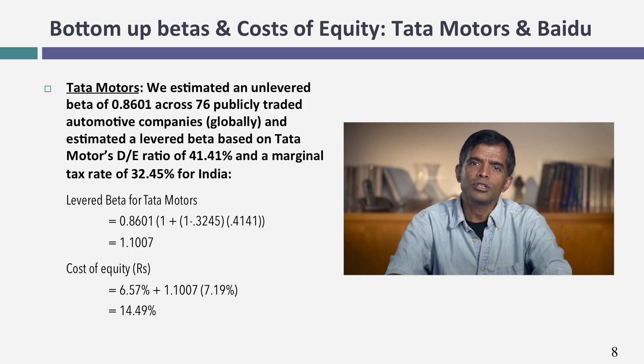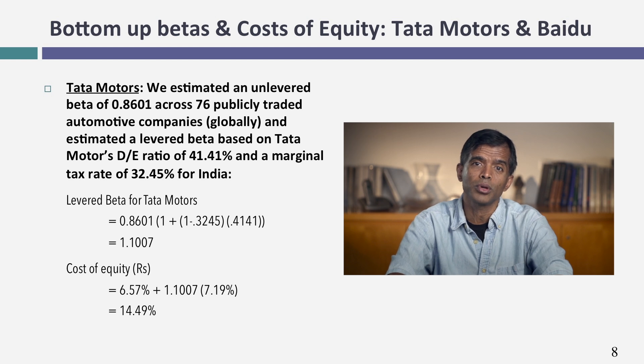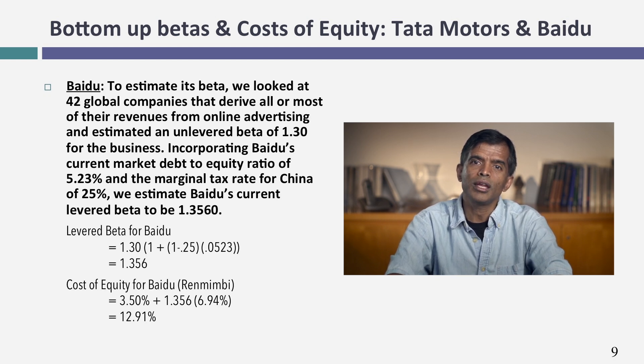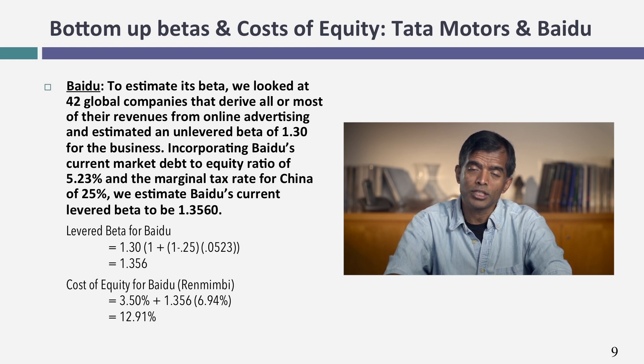I computed the cost of equity for Tata Motors and Baidu; the process remains the same. These companies were easier to work with because they're both in single businesses. For Tata Motors, I used the beta for global automobile companies to arrive at a levered beta of 1.10, and used a rupee risk-free rate of 6.57% plus the appropriate equity risk premium. For Baidu, I used a yuan risk-free rate and the beta for online advertising companies. The framework is: your currency choice is in your risk-free rate, your business mix is in your beta, and your geographical breakdown is in your equity risk premium.